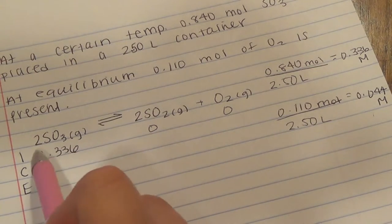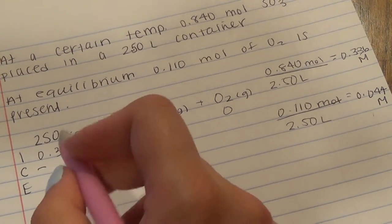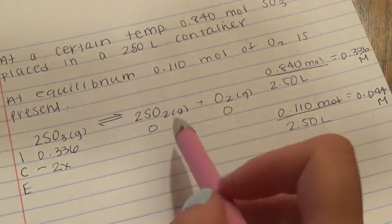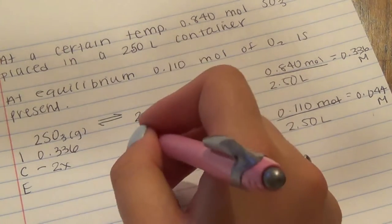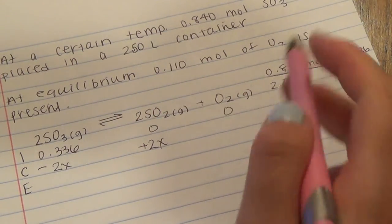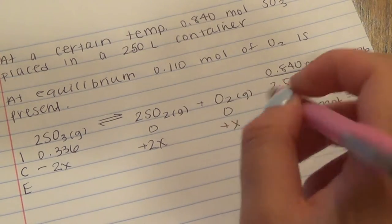And then since there's a 2 in front of it, we have to do a 2x. And then here's another 2, so this is a plus 2x. And there's just a 1 in front of that, so it's just plus x.